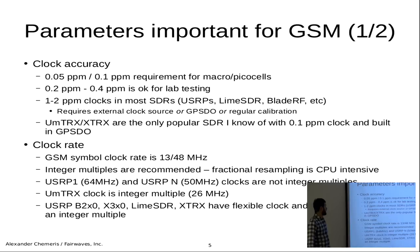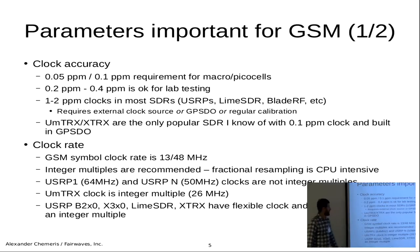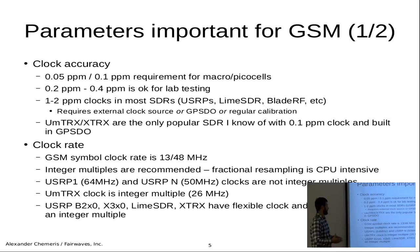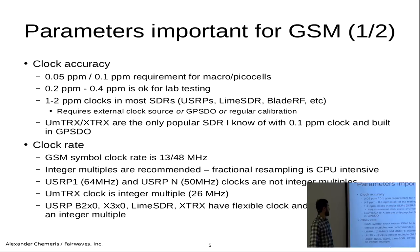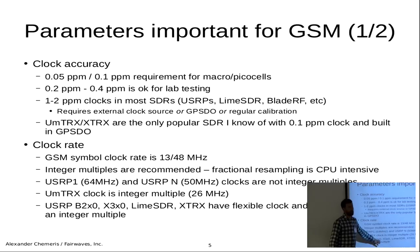The next thing is clock rate. The GSM symbol clock rate is 13/48 MHz. Ideally you want to avoid fractional resampling — it makes the signal slightly worse and adds a lot of CPU consumption. It's not the worst thing ever; for example, USRP N series, even though it has a 50 MHz clock requiring fractional resampling, still generates a good signal and many people use it in their labs. It's better to have integer rates. If you are choosing something for your experimentation, it's better to have something like UMTRX or B200, which has a flexible clock rate that adjusts to your requirements.